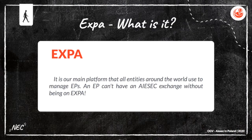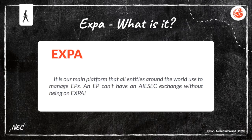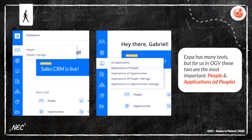So what is Expa exactly? Expa is our main platform that all entities around the world use to manage EPs. An EP can't have an AIESEC exchange without being on Expa. Basically, when someone is interested in an exchange, this person registers on the AIESEC website and goes here. This is how Expa looks like.